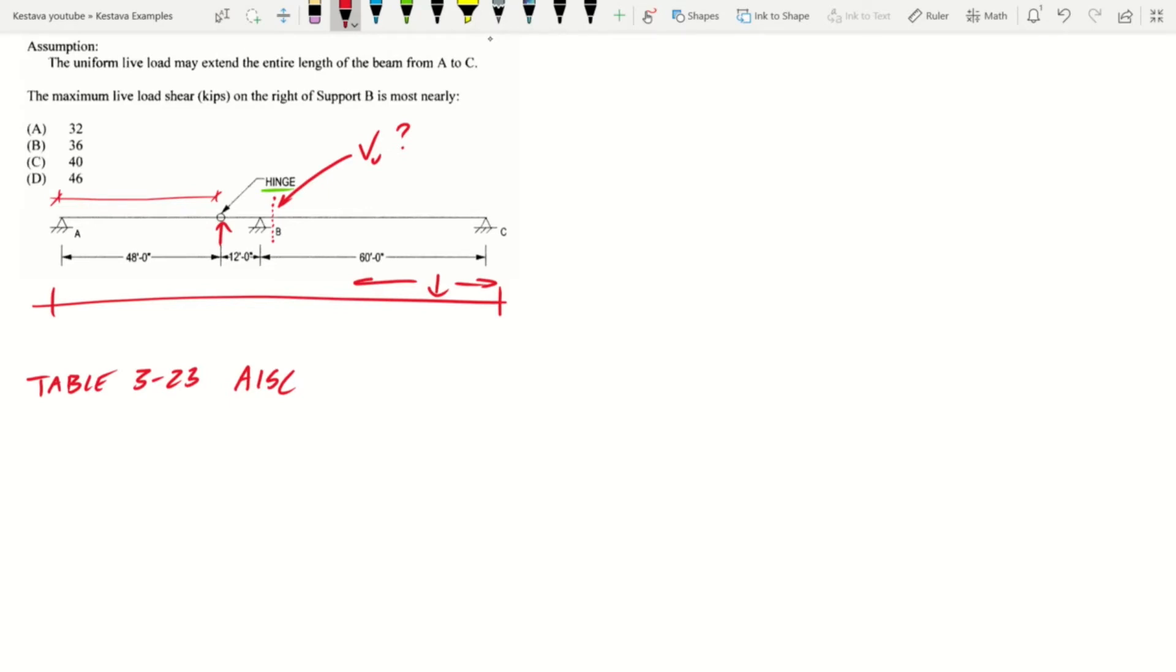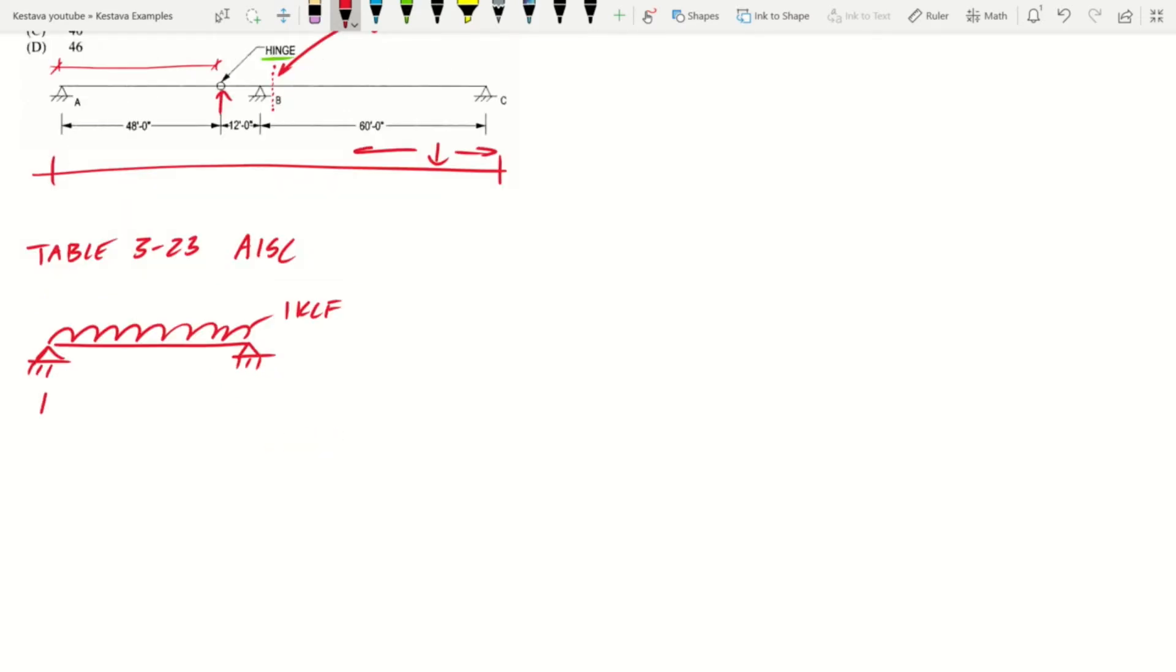That basically becomes a simple span, and we need to find a reaction point at that hinge. So since it's now basically a simple span, we know that we have something like this with a uniform live load of 1klf. So we need to find, and we know in this case R1 equals R2.